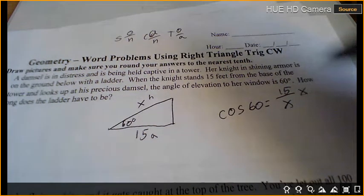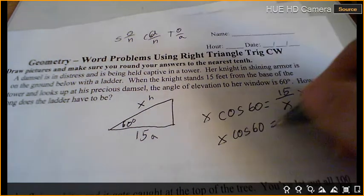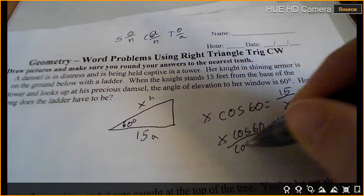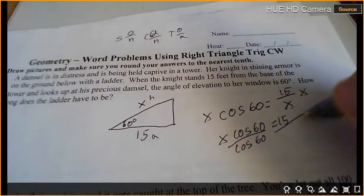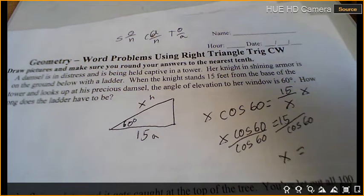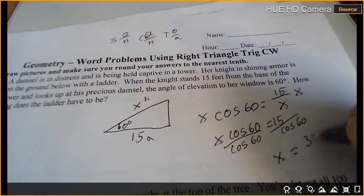Just multiply by x, and we get x cosine 60 equals 15. And then what do we do? Divide by cosine 60. And you're going to see the trig function key is... 30 feet.